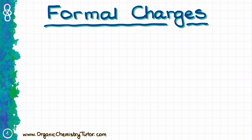The easiest way to approach formal charges is through bonding patterns. We know how the bonding pattern looks for neutral core elements. For instance, carbon will have four bonds. Nitrogen will have three bonds and an electron pair. Oxygen will have two bonds and two electron pairs, while halogens will have one bond and three electron pairs. And hydrogen only has one bond.